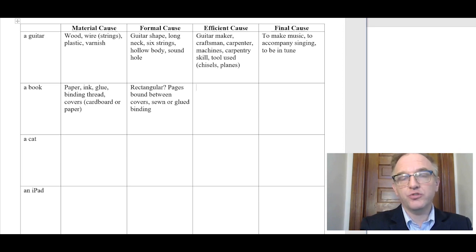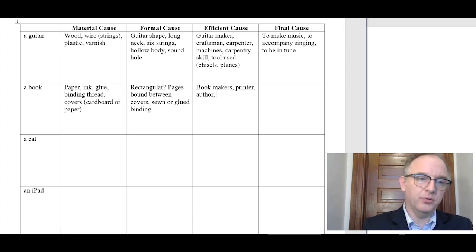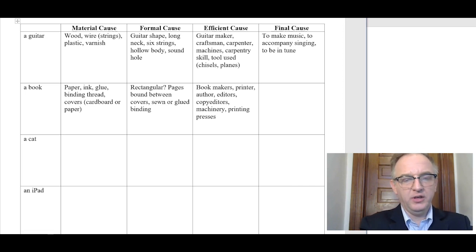Efficient cause of a book. How do books come to be made? There are a lot of people involved in the making of a book. So the author of the book writes it, the printer of the book actually creates the physical book. Maybe along the way there are editors, copy editors, and the like involved in making it. Also machinery, printing presses, and the like. Whether it's made by hand or made by machines, there's some people and machinery involved in making it.